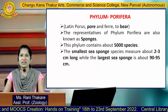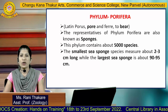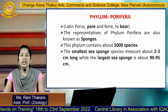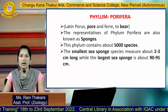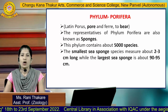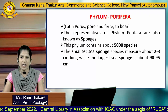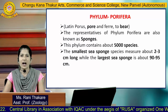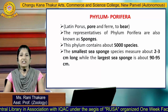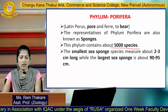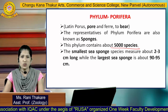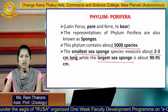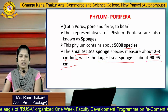Porifera is a Latin word where 'porus' means 'pore' and 'ferre' means 'to bear' — so pore-bearing animals are placed under this phylum. Members of phylum Porifera are also known as sponges. This phylum includes about 5,000 different species, among which the smallest sea sponge is about 2 to 3 cm long, while the largest sea sponge is about 90 to 95 cm.